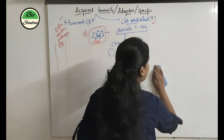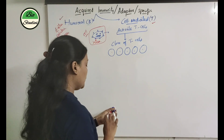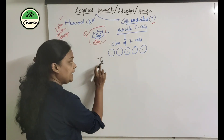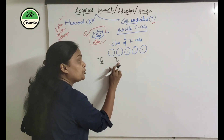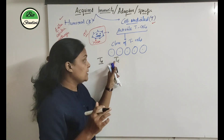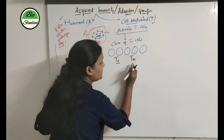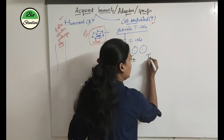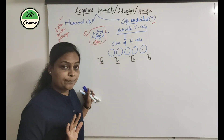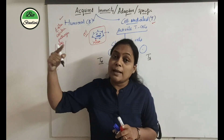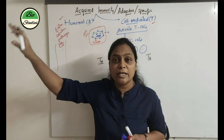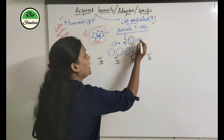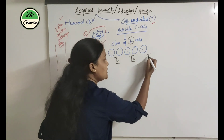T-cells will differentiate into different types. From B-cells we get just two types: plasma cells and memory cells — plasma cells for antibody production and memory cells for immunological memory. But T-cells differentiate into TH cells (T helper cells), TC cells (cytotoxic T cells), TM cells (memory T cells), and TS cells (suppressor T cells).